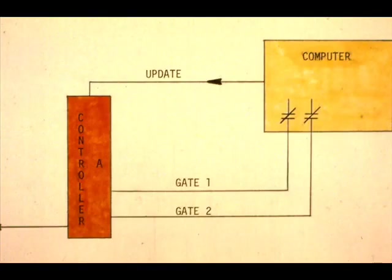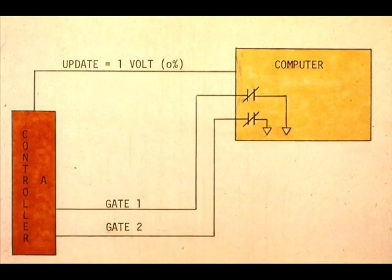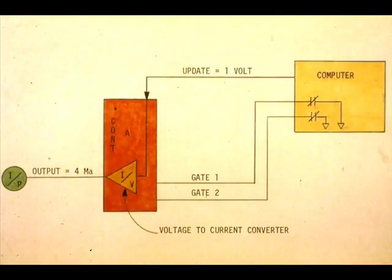For instance, controller A will read the update line only when the two gates are grounded through the computer contacts. If the update line is 1 volt or 0% computer output and both controller gates operate, the controller will read the update line and produce an output current directly proportional to the update voltage.